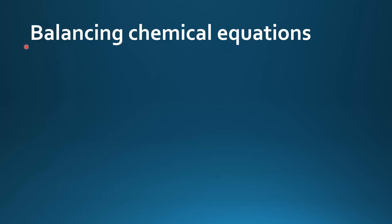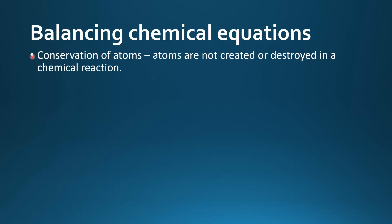In this video we will look at balancing chemical equations. The reason that we need to balance a chemical equation is all to do with the conservation of atoms, which states that atoms are not created or destroyed in a chemical reaction. This means that the number of atoms in the products and the reactants must be the same.